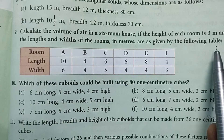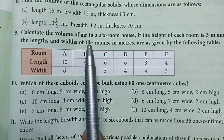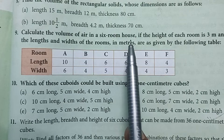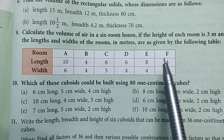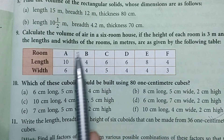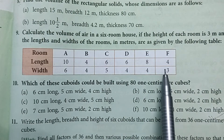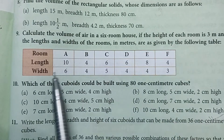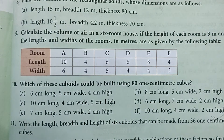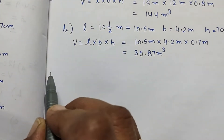In this question we have to find out the volume of air in a six-room house, in which there are six rooms. The height of each room is three meters and the length and width are different for each room. The height given is three meters for all rooms.